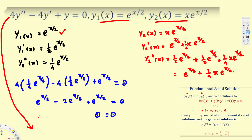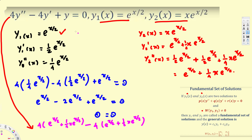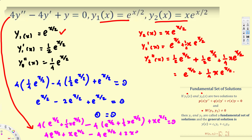Plugging y2 into the equation: 4*y'' = 4*(e^(x/2) + (1/4)x*e^(x/2)) = 4e^(x/2) + x*e^(x/2). Then minus 4*y' = minus 4*(e^(x/2) + (1/2)x*e^(x/2)) = minus 4e^(x/2) minus 2x*e^(x/2). Then plus y = x*e^(x/2). The whole expression should equal zero.